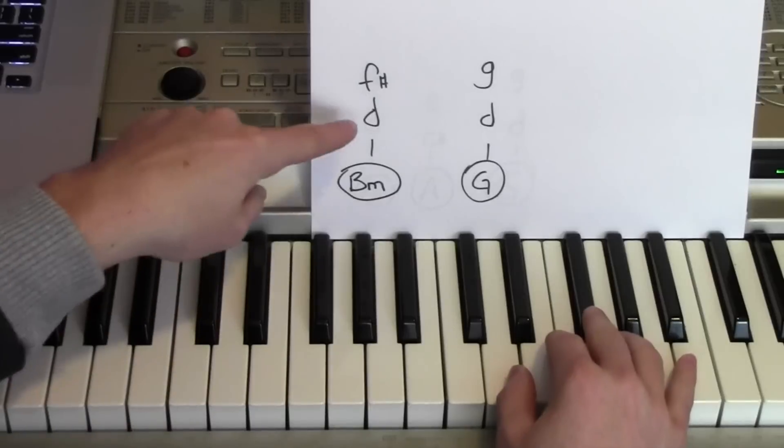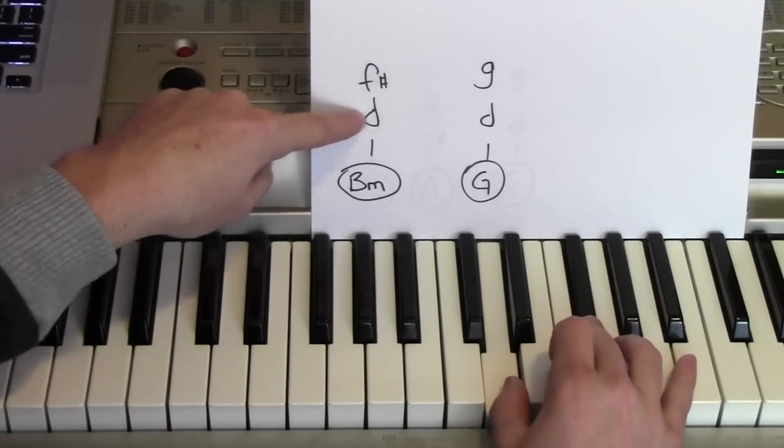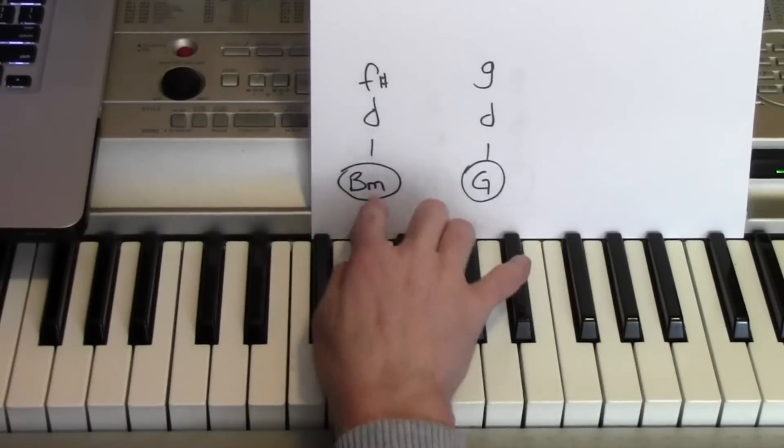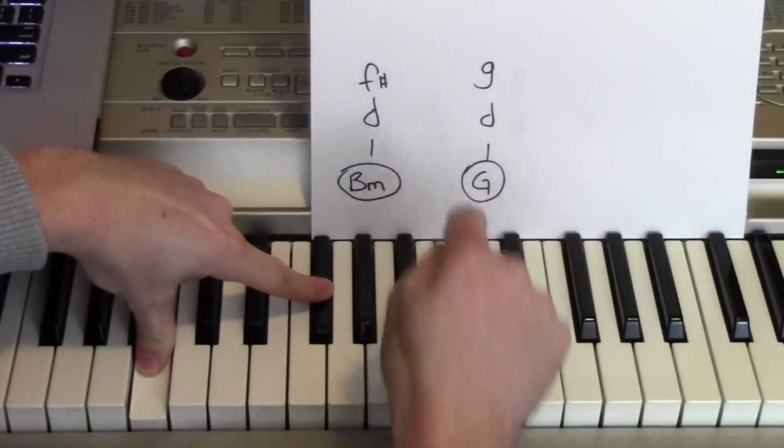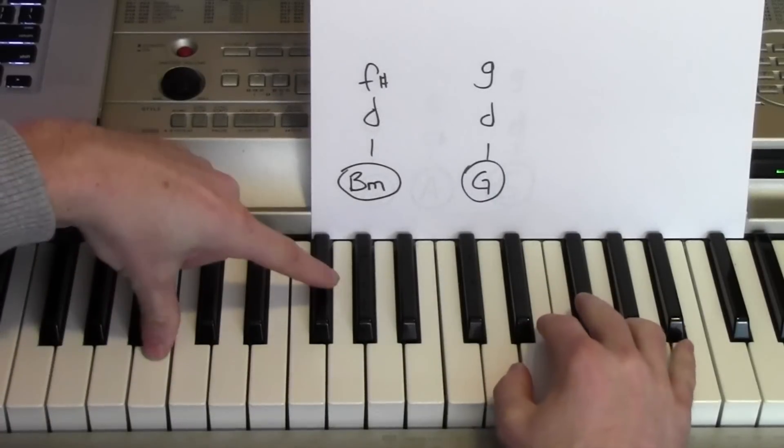And here's what I'm doing. My right hand is playing a D and an F sharp, and then a D and a G. My left hand for the B minor I'm playing this note and that note, those two notes right there. For the G I'm playing those two notes right there. So I put that together.